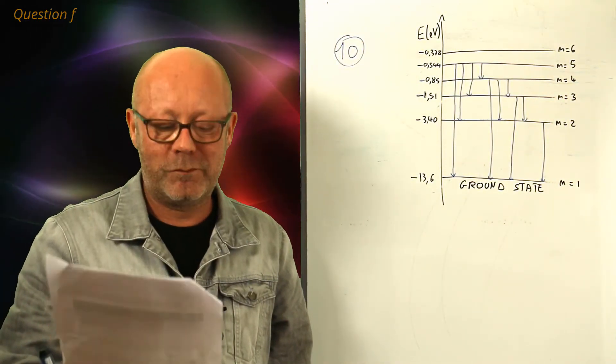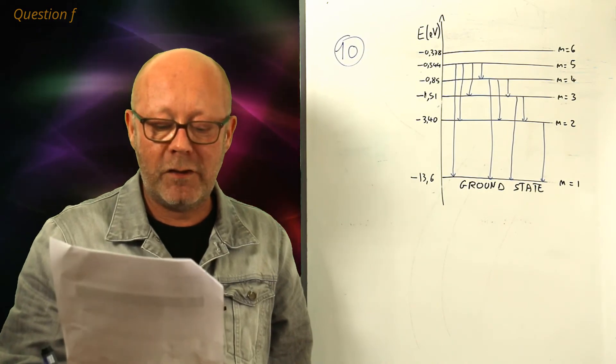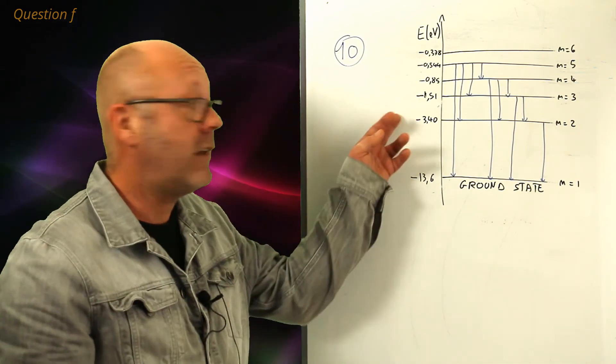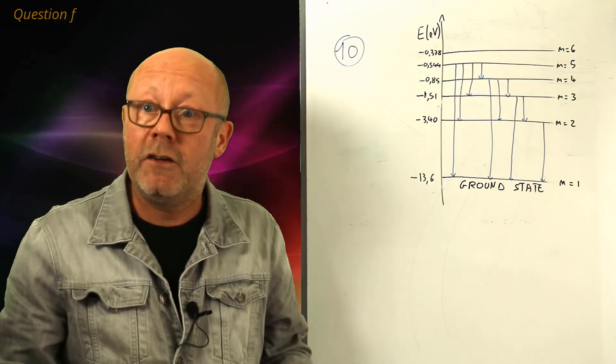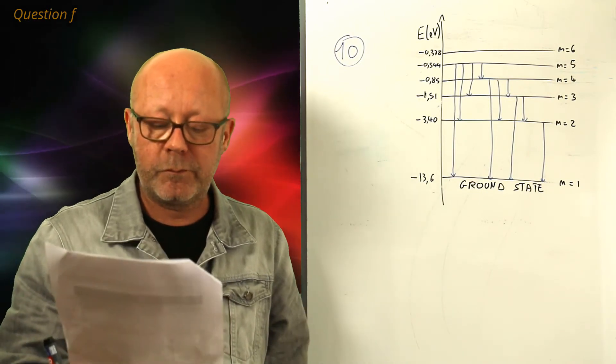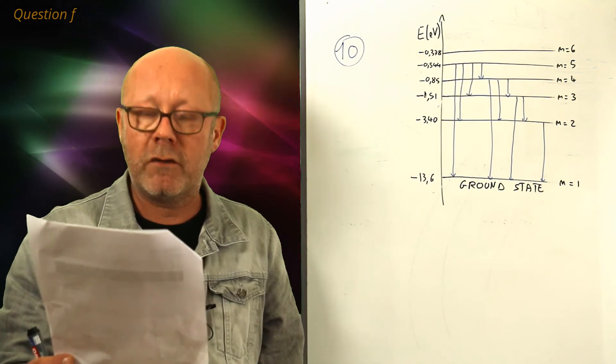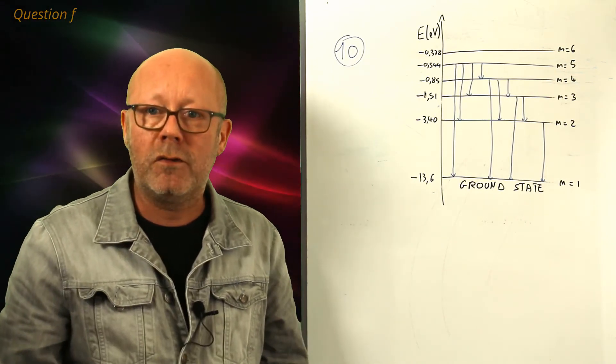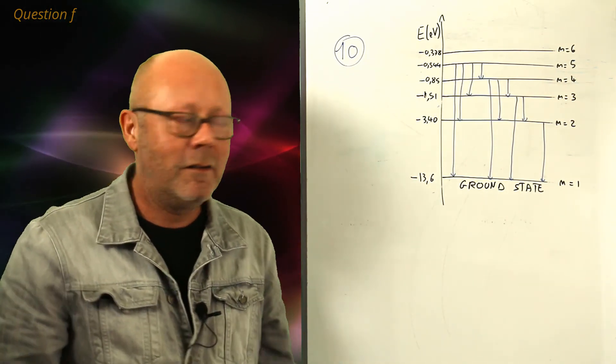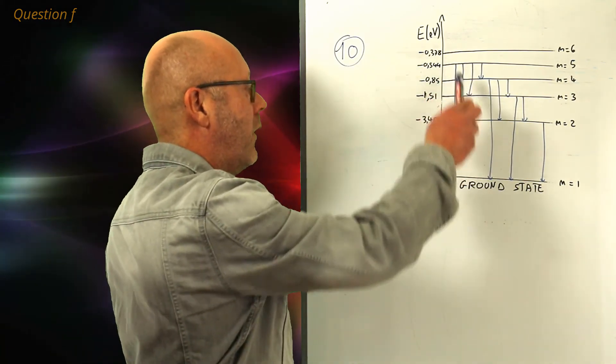Next question. For the atom mentioned in question E, that is, this atom with an initial level of energy, N equals 5. To what transition would correspond the most energetic photon emitted? Well, it would correspond to the most energetic transition, right? So, from 5 to 1.